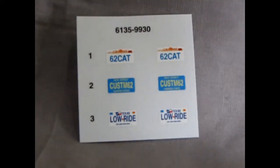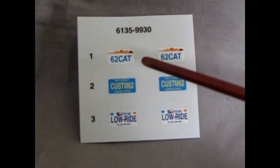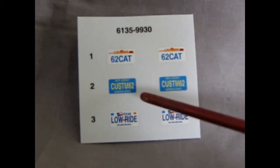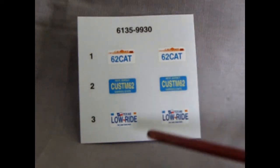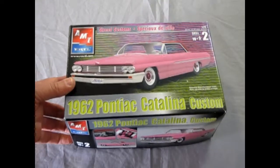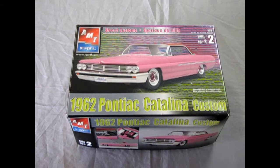Finally our decal sheet consists of just three sets of license plates. The first is a California 62 cat, second is New Jersey custom 62 and finally Texas low ride. And that concludes our review of the AMT Ertl 1962 Pontiac Catalina Custom.